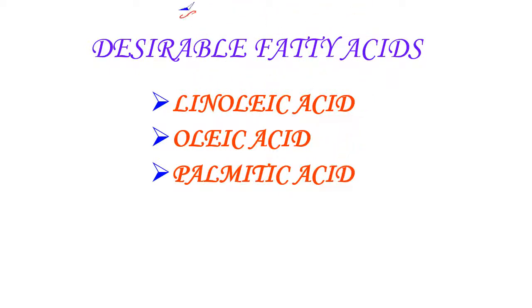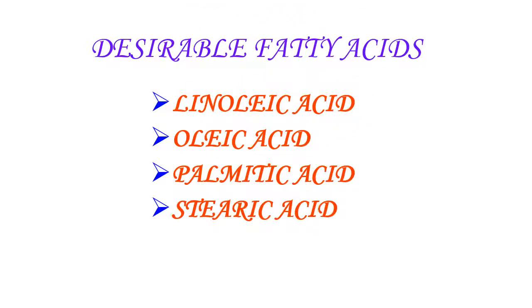Coming to desirable fatty acids in Brassica: linoleic acid, oleic acid, palmitic acid, and stearic acid are desirable. Undesirable fatty acids are erucic acid and linolenic acid.